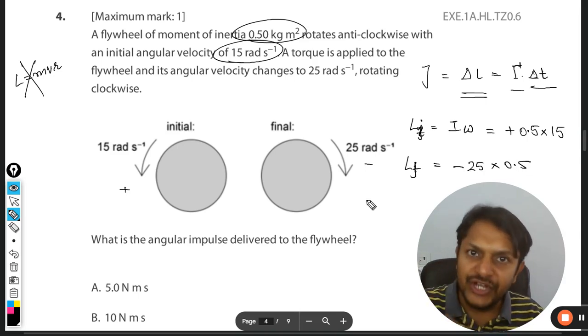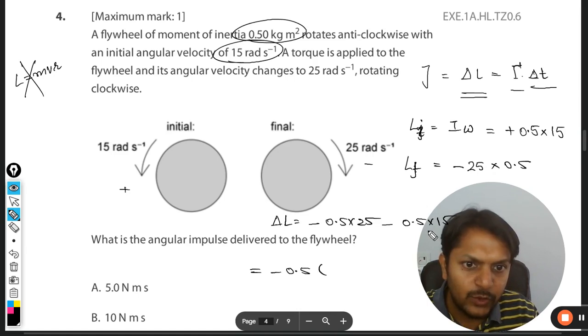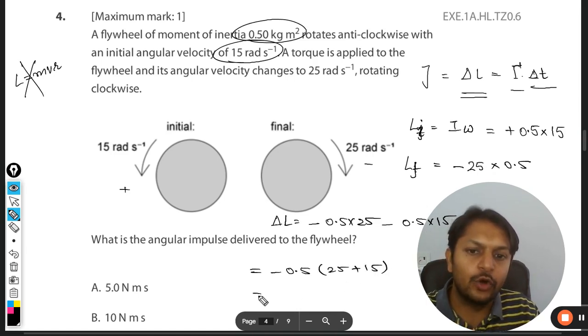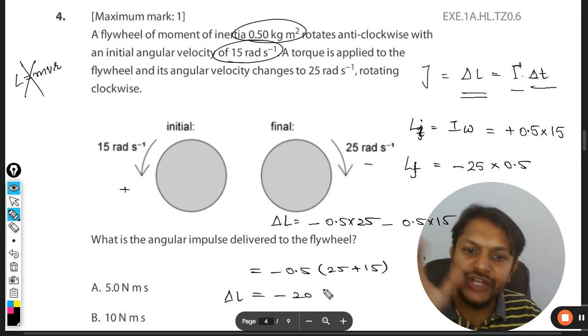And now we are interested in changing it. So delta L will be negative 0.5 times 25 minus 0.5 times 15. So I can just take 0.5 common. It will be 25 plus 15, so it will be 30, 40, and half of 40 is 20.